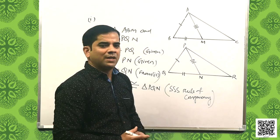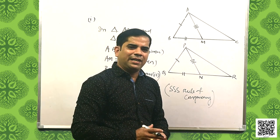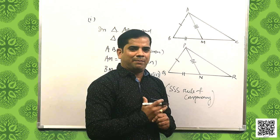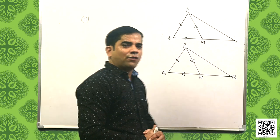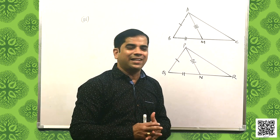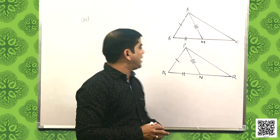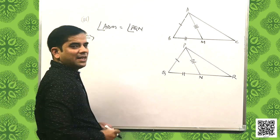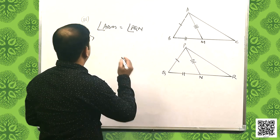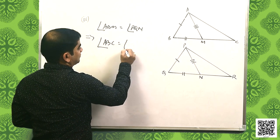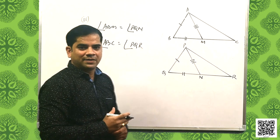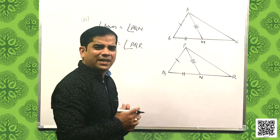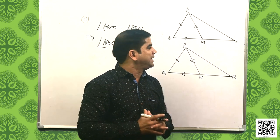We have solved the first part. Now for the second part: from the previous result, we have found that angle ABM is equal to angle PQN by CPCT. That implies angle ABC is equal to angle PQR.